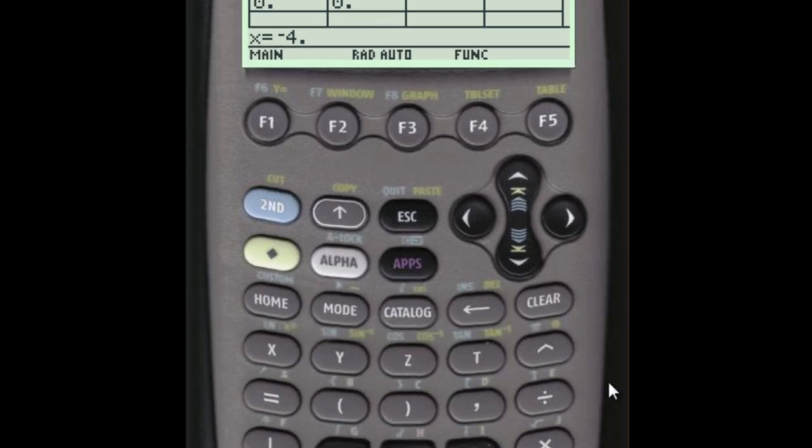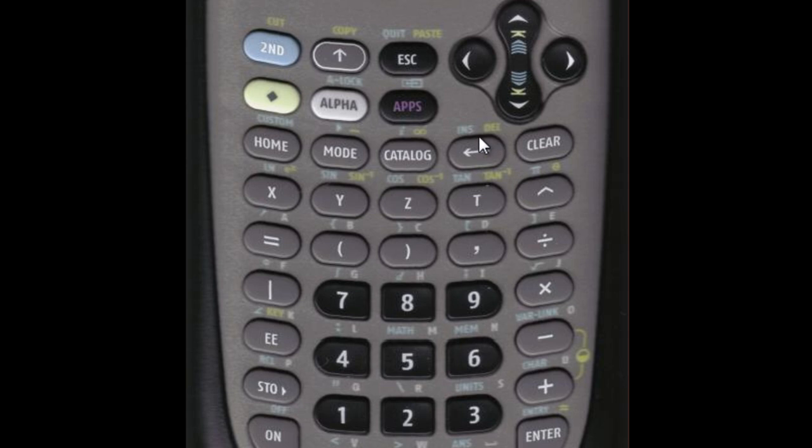On the whole keyboard you'll find that there are above the buttons different commands in blue and this yellow. To access the blue commands, you'll hit the second key. To access the yellow commands like we've been doing, you'll hit this diamond key.